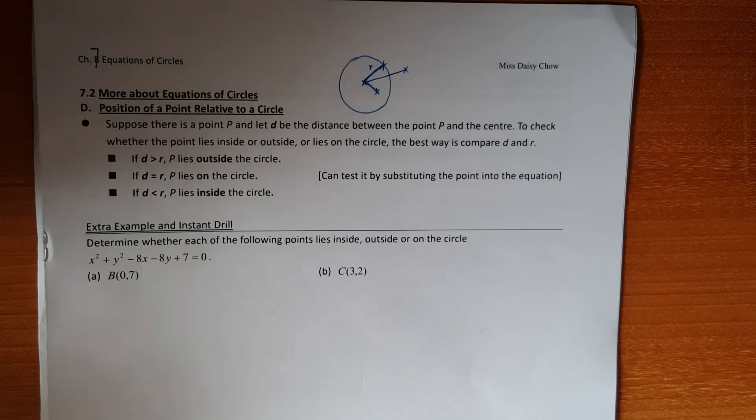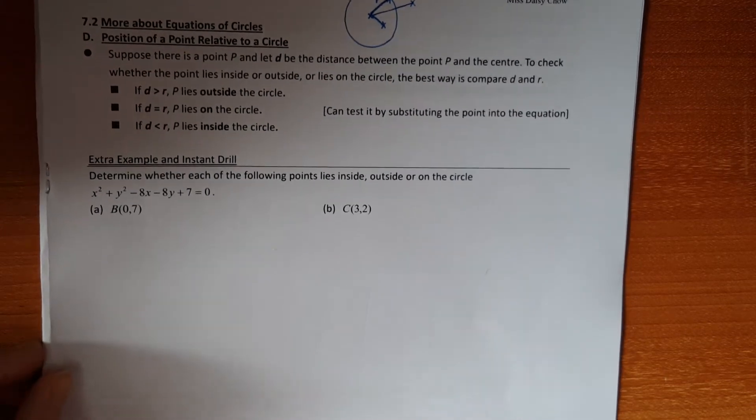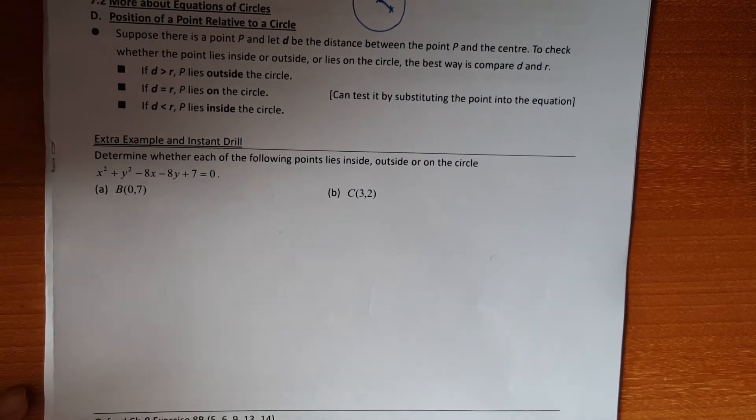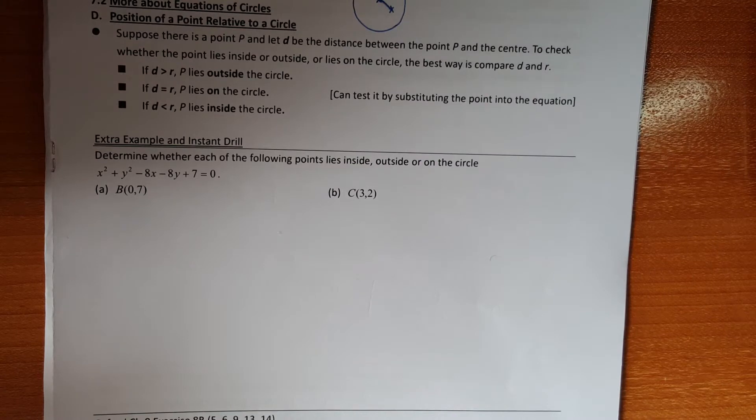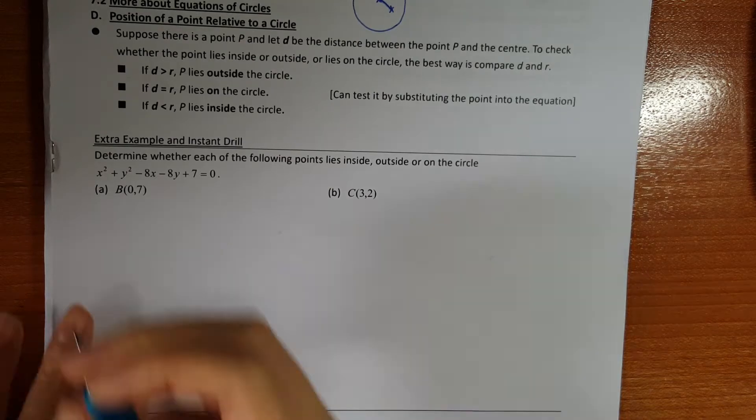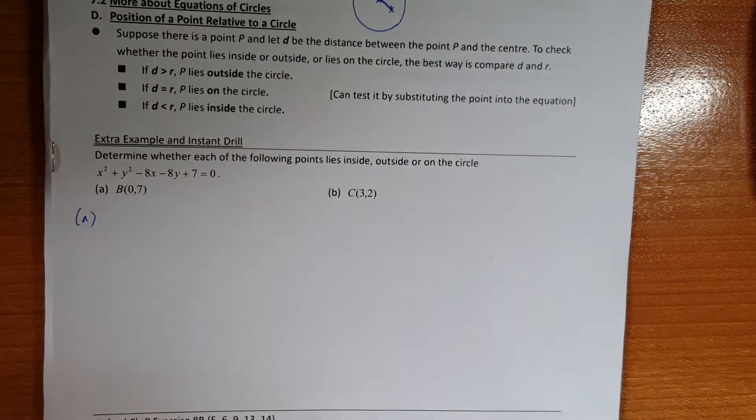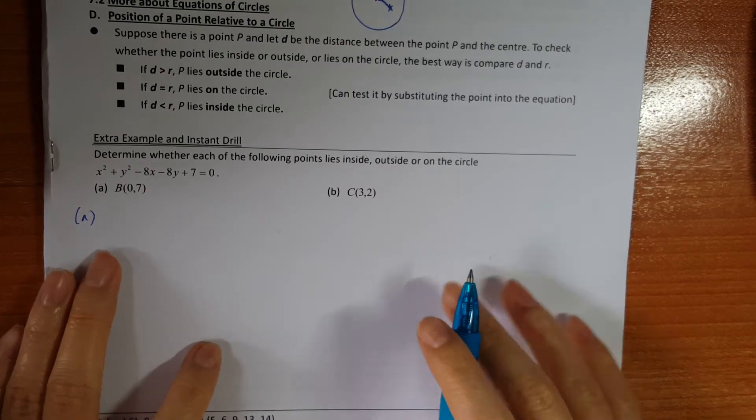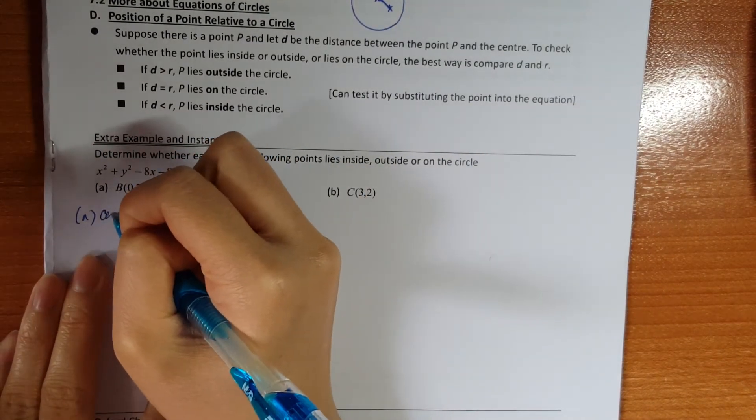We need to calculate the radius and use distance formula to calculate these two points. So let's do some questions here. Maybe I switch on the lights. Let's do the questions together. For part A, first of all, you have to find out the center first.